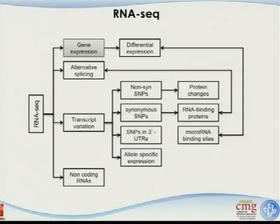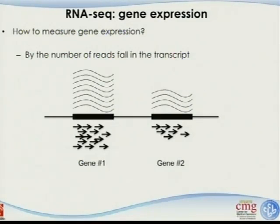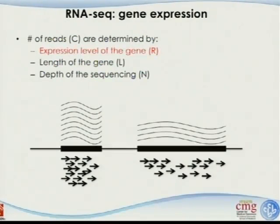We went through this flowchart, and this is the part I'm going to focus on, which is the gene expression part — it's the very beginning stage. The question here is, after we've got RNA sequencing data, how are we going to measure the gene expression? It can be pretty simple: if this is one gene and this is another gene, you just count the number of reads that fall into each individual gene, and you can have a pretty reasonable reference on how much the original expression level is.